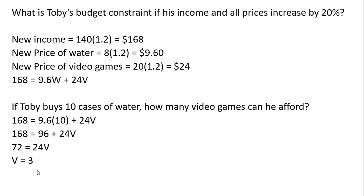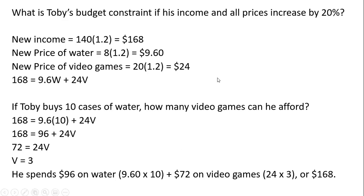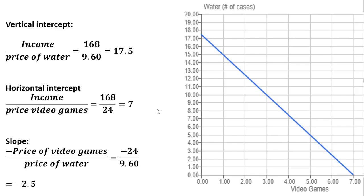Toby could afford 3 video games if he's buying 10 cases of water — no different than before. If his income goes up by 20% and prices all go up by 20%, he's no better off or worse off; his choice set is unchanged. Looking at his budget constraint, it will be unchanged: with $168 spent all on water at $9.60, he can still afford 17.5 cases — the vertical intercept. If he spends $168 on video games at $24 each, he can afford at most 7 video games, just as before. The slope didn't change — it's still minus 2.5.